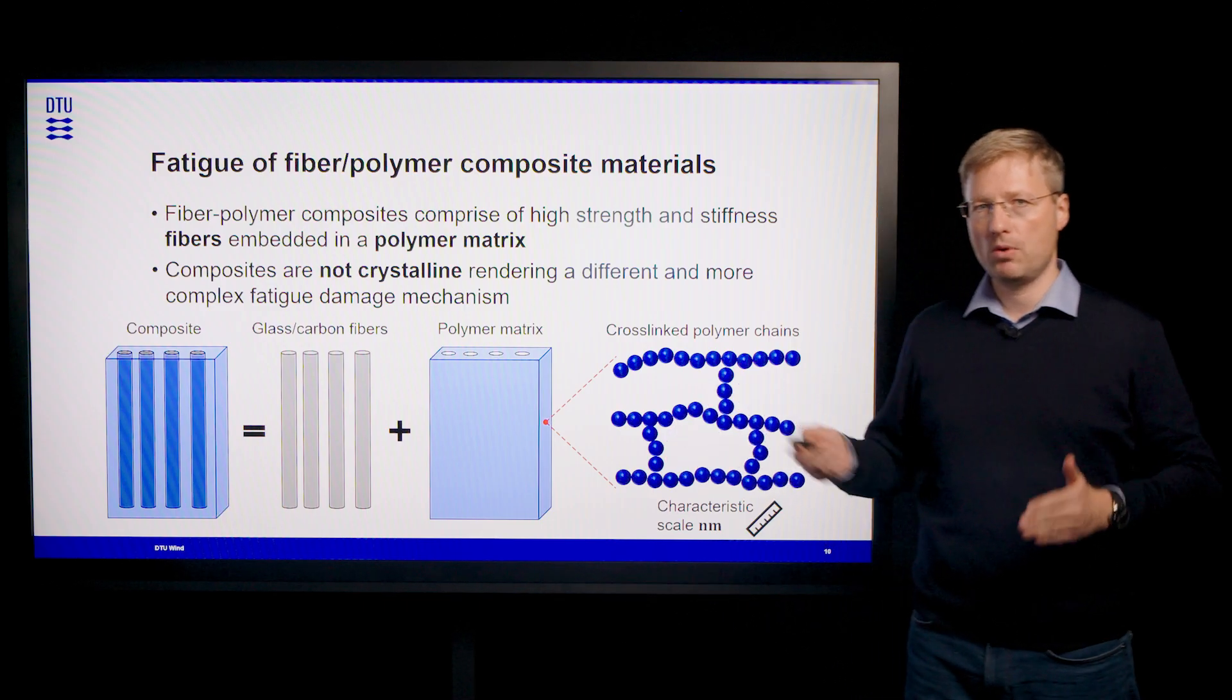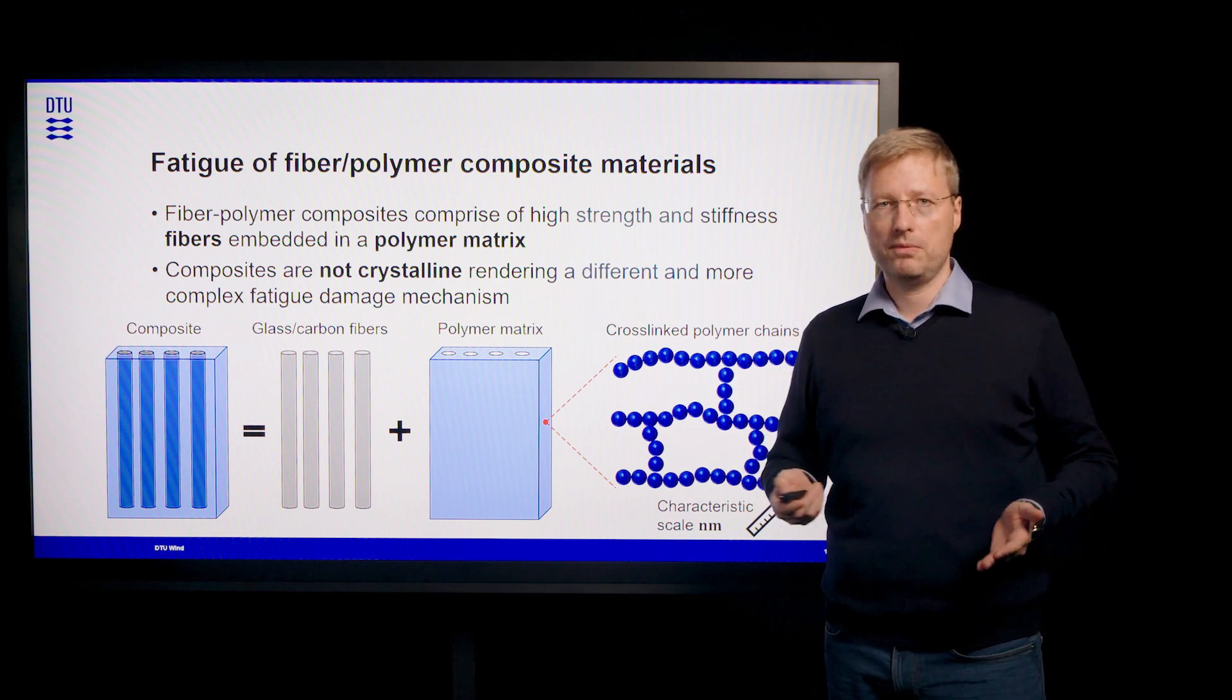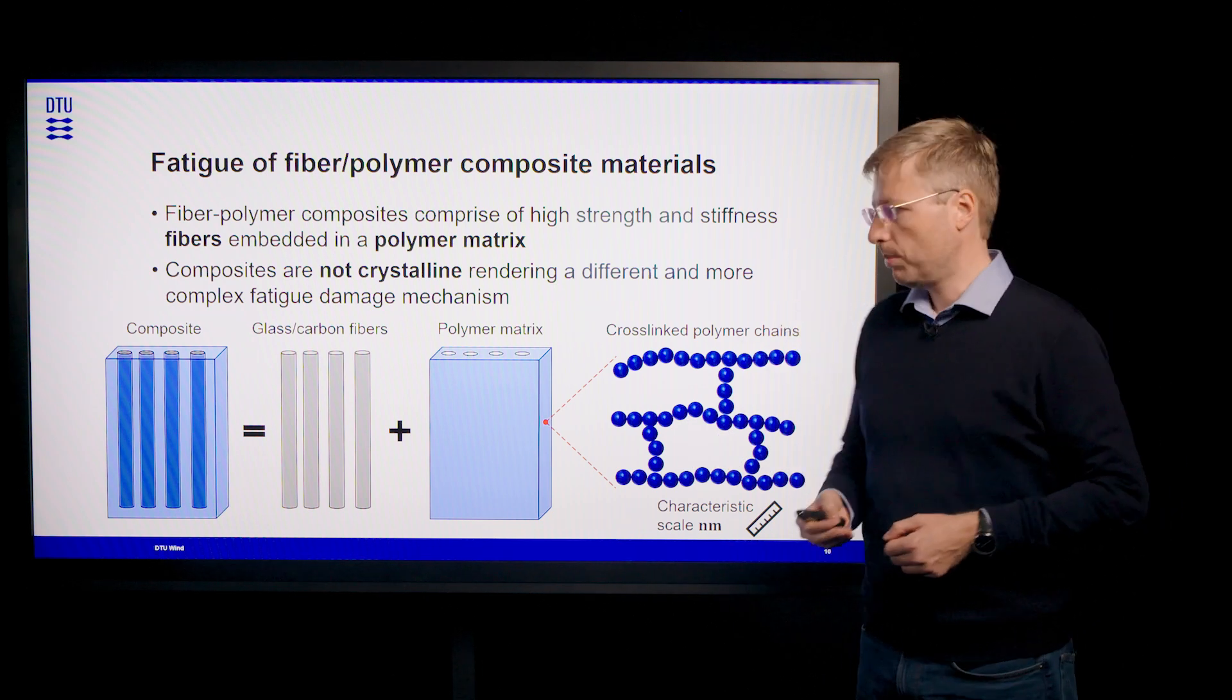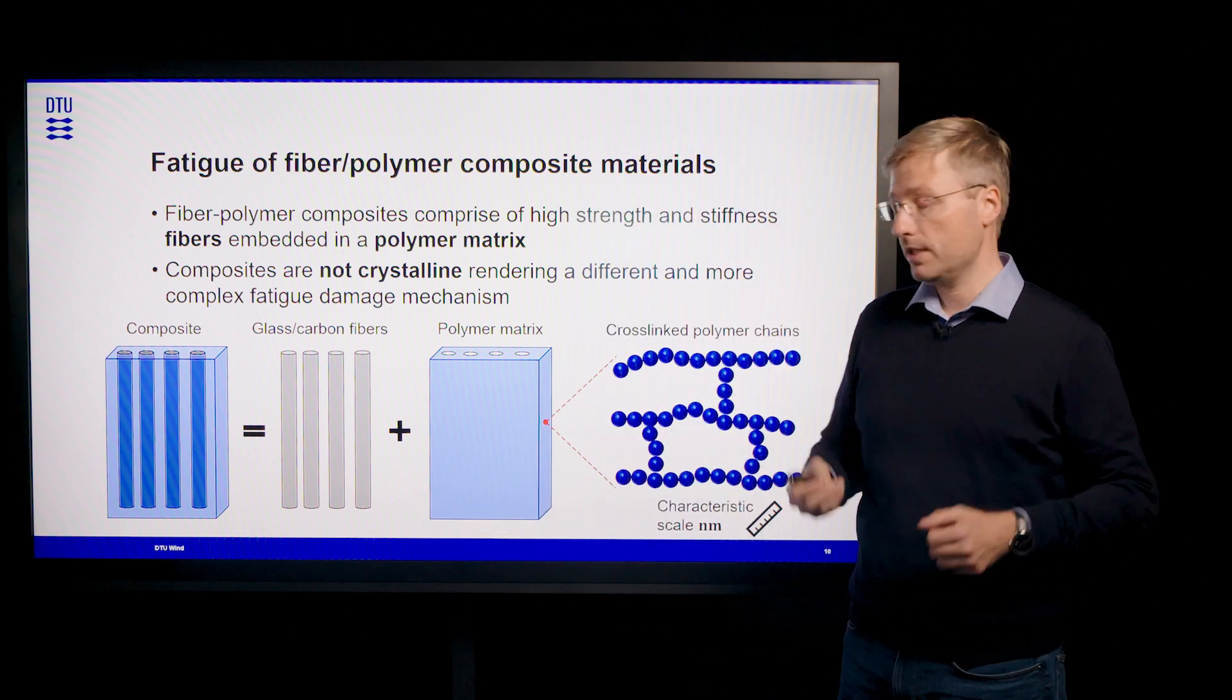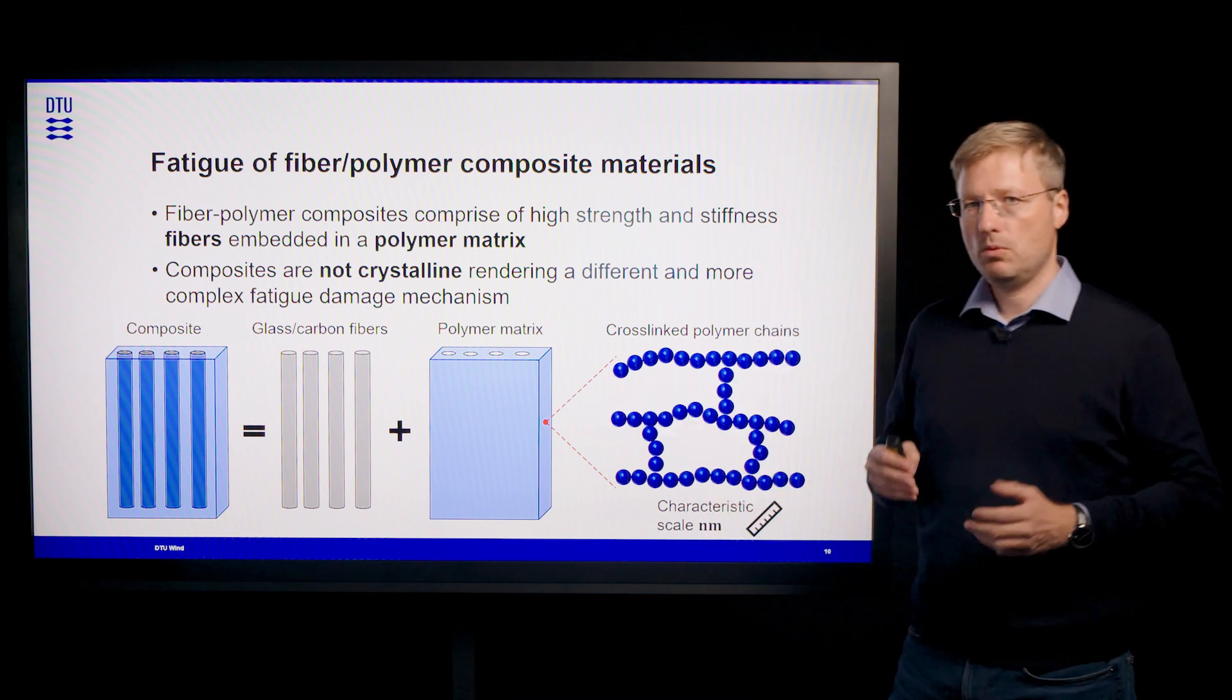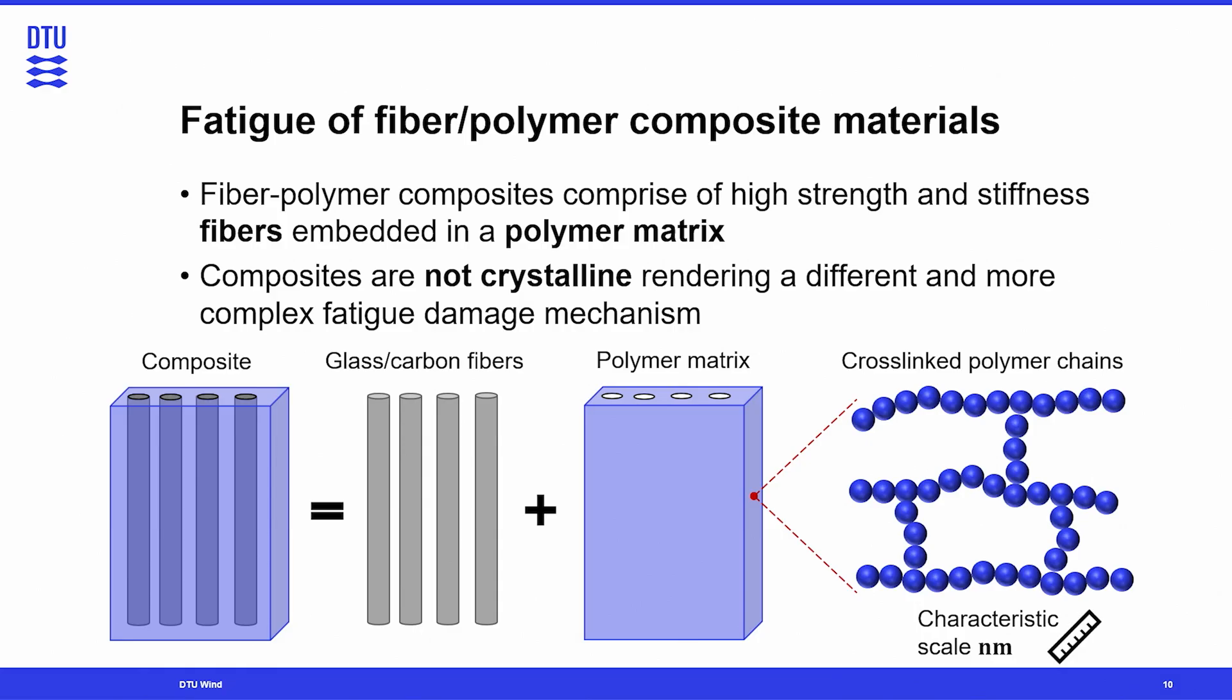If we shift our focus now from metals to composite materials, we first need to define what is a composite material. So a fiber-polymer composite material comprises of glass or carbon fibers, which have a very high strength and which are embedded in a polymer matrix. If we zoom into the polymer matrix, we see that the polymer matrix consists of these main chains which are connected by those links.